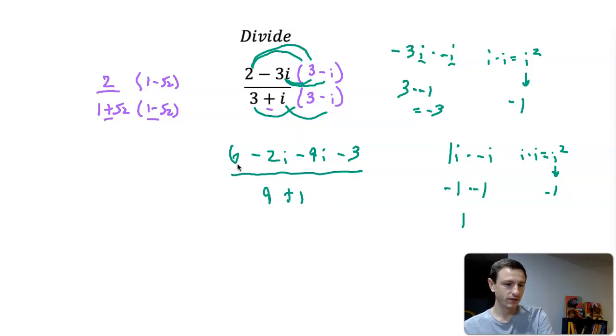Now on the top we can clean this up. I have 6 minus 3, I also have negative 2i minus 9i. So 6 minus 3 is 3, negative 2i minus 9i is going to be negative 11i, over 9 plus 1 which is 10.